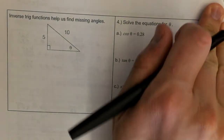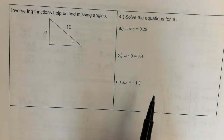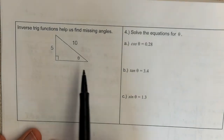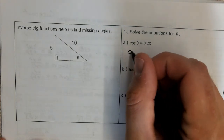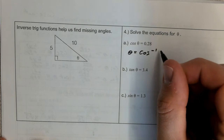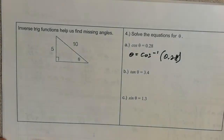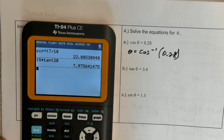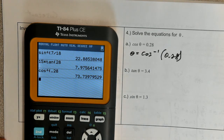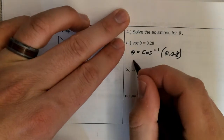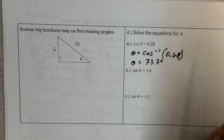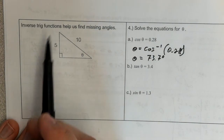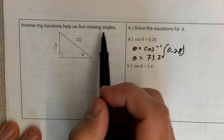We've already talked about inverse trig functions. If you wanted to find theta, you'd apply the inverse cosine to both sides: theta equals inverse cosine of 0.28. In your calculator or Desmos, inverse cosine of 0.28 gives you 73.7 degrees.